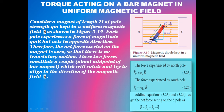Because both forces are equal but acting in opposite directions, the net force exerted on the magnet is zero.